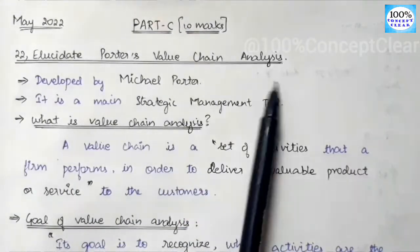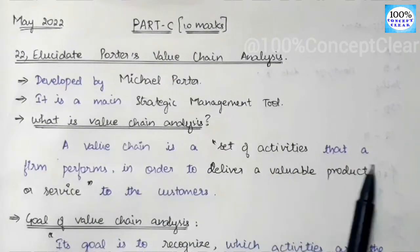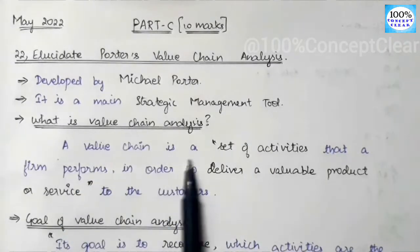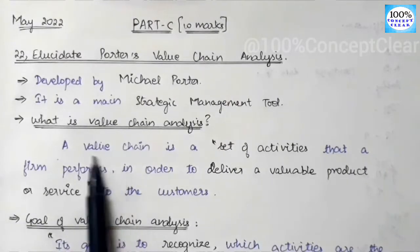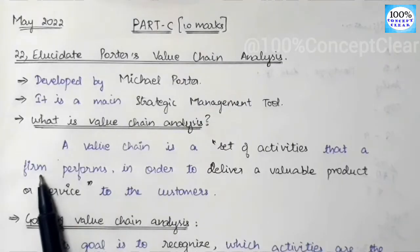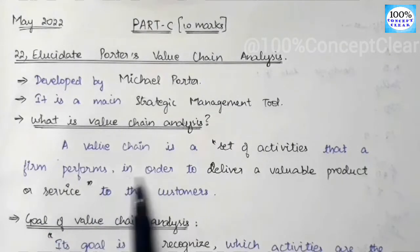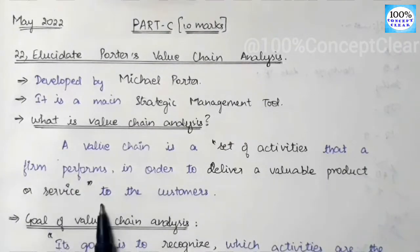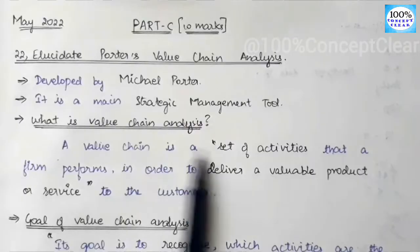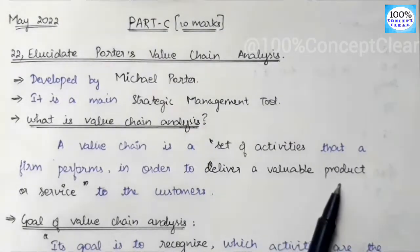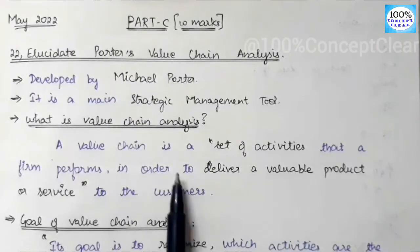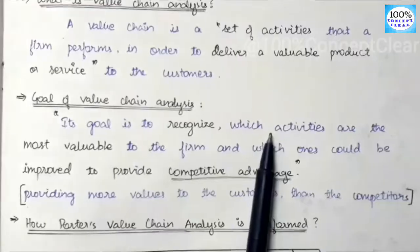In value chain analysis, a value chain is a set of activities that a firm performs in order to deliver a valuable product or service to the customers. The value chain links product, service quality, producer, and customer relationship.